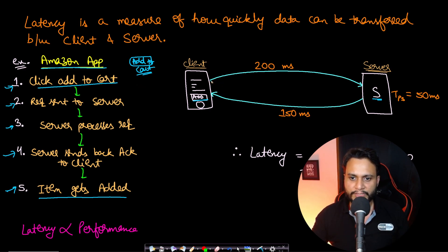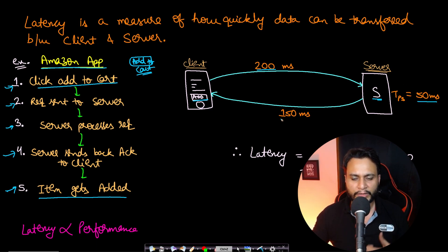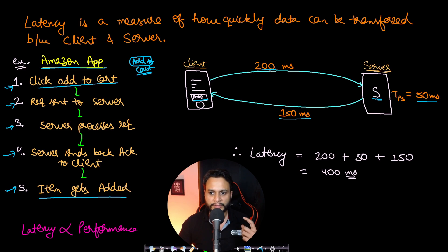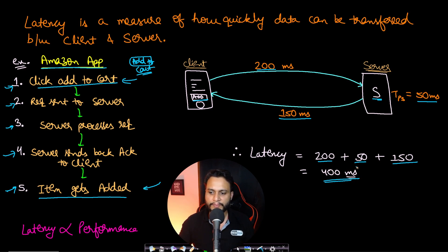This time gap was actually taken to process your request. Let's assume 200ms to send the request to the server, 50 additional ms to process your request at the server, and 150ms to transmit the response from the server back to the client. The entire time span is 200 + 50 + 150, which equals 400ms. So the latency to add an item to the cart was 400ms in this scenario.